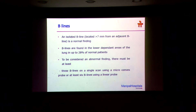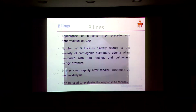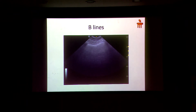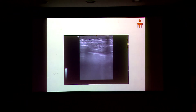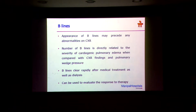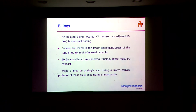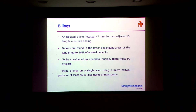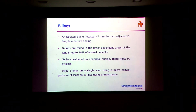It is normal to have some B-lines. It depends on how many B-lines you are seeing and how widely they are spaced. Isolated B-lines more than 7mm apart is a normal finding, and the lower parts of the lung usually will have some B-lines as well — that is also normal. To be considered abnormal, if you are using a micro-convex probe, more than 3 B-lines is abnormal; if you are using the linear probe, more than 6 B-lines in one view is abnormal.